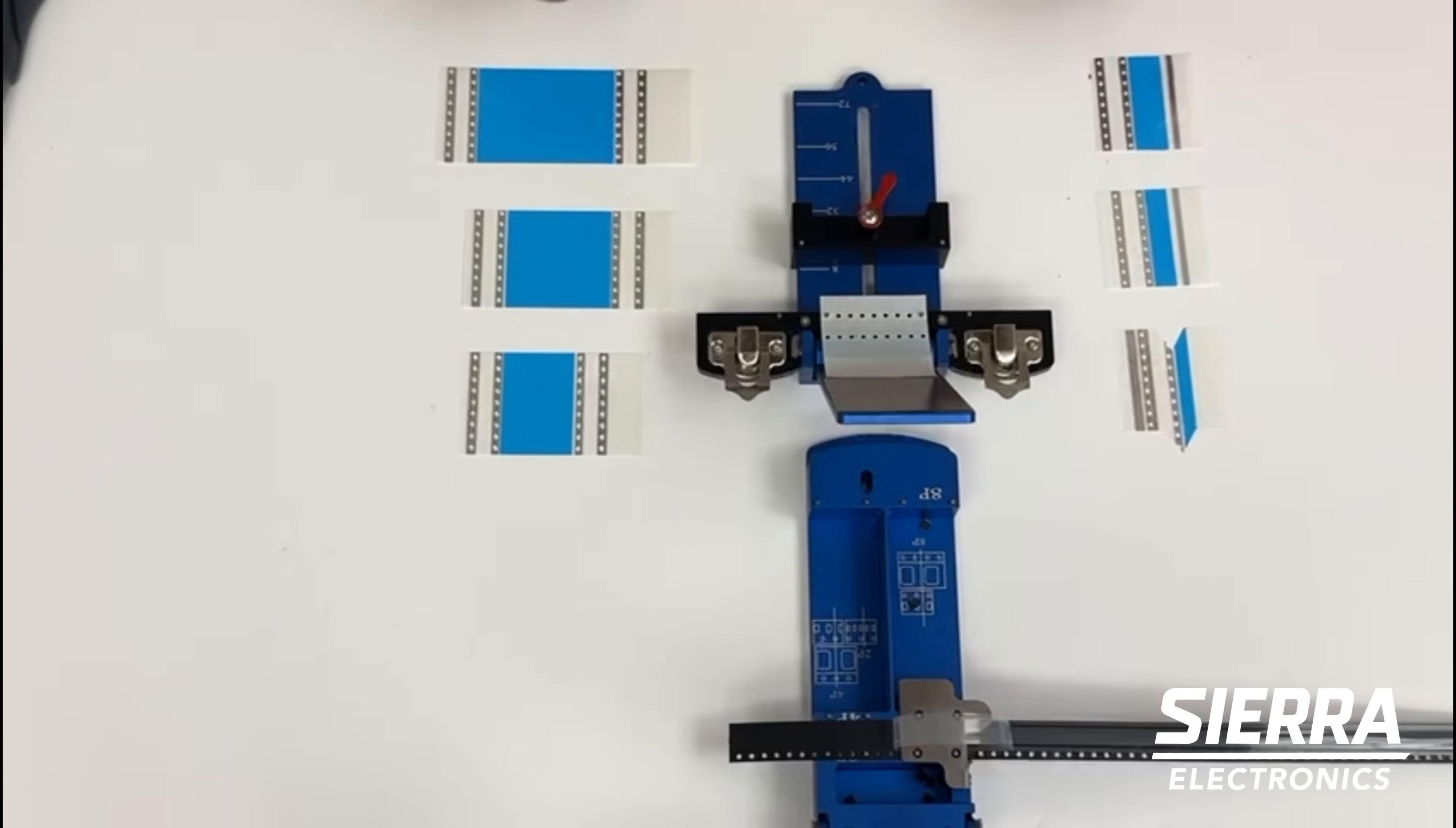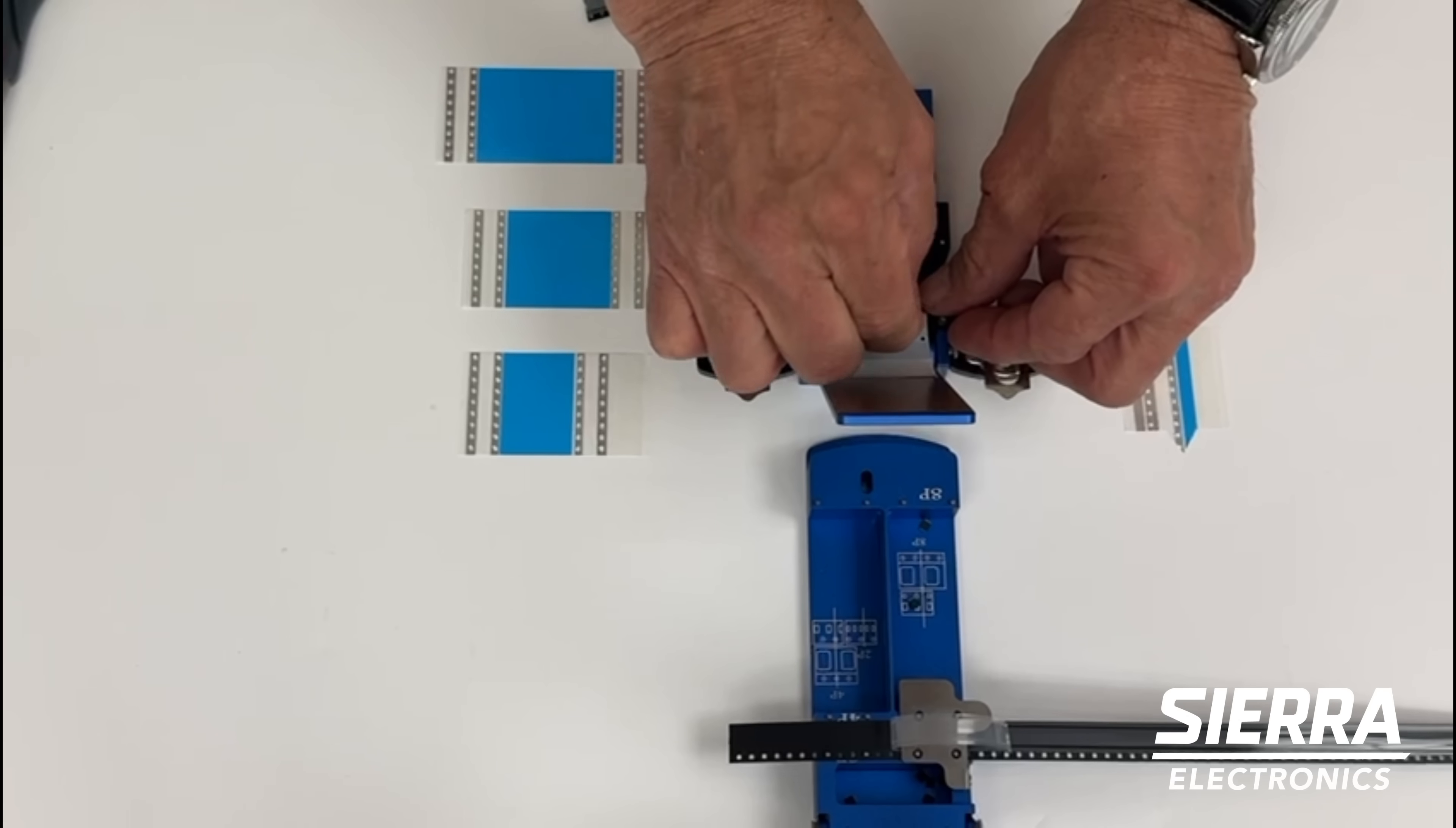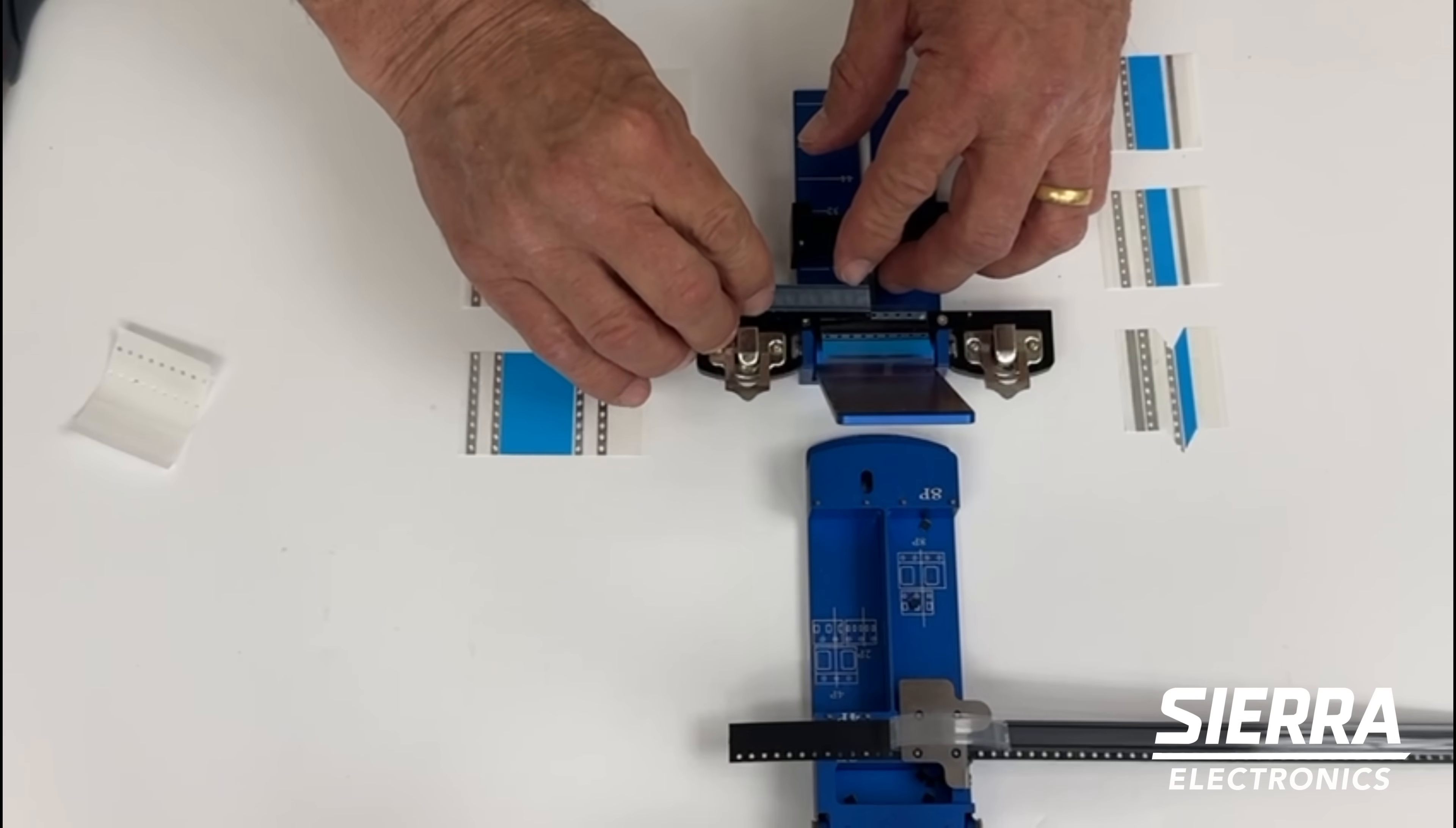We'll remove the liner from the splice tape and place the two pieces of carrier tape that are going to be spliced onto the alignment pins.